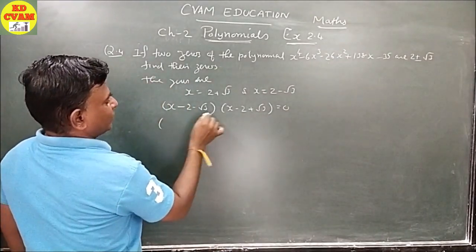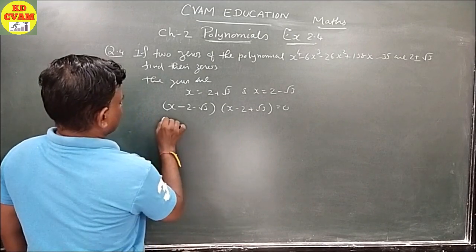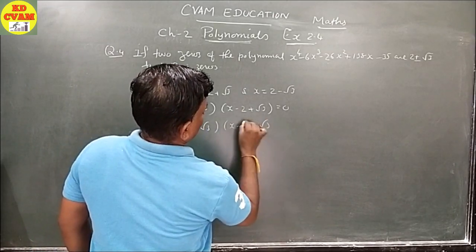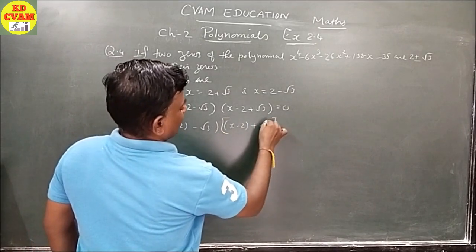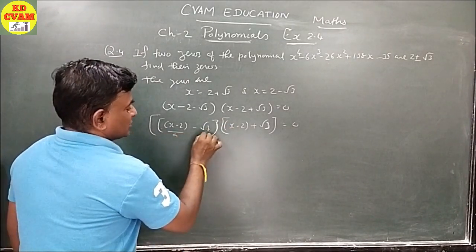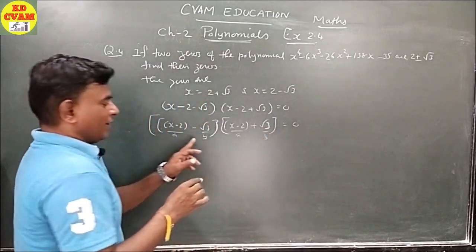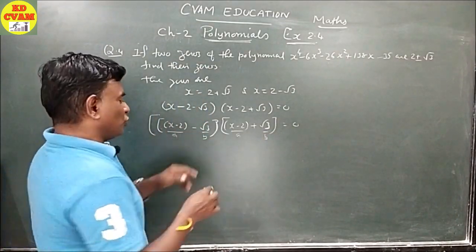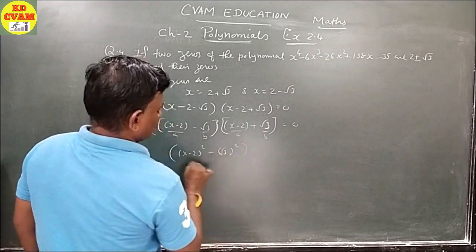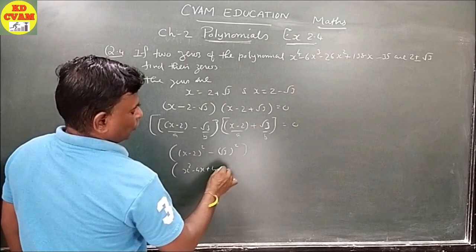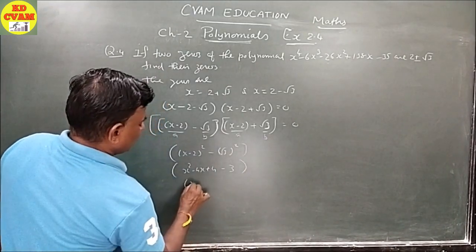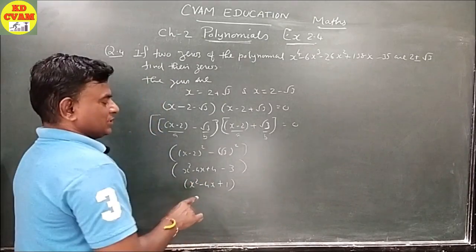Multiplying these factors: (x - 2 - √3)(x - 2 + √3) = (x - 2)² - (√3)² = x² - 4x + 4 - 3 = x² - 4x + 1. This is our G(X), the divisor.